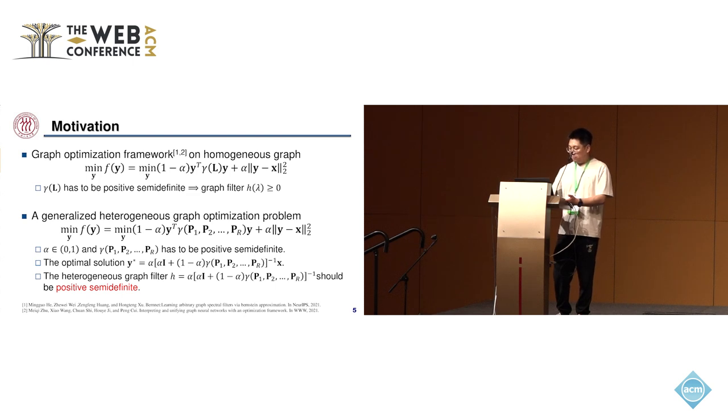We extended the optimization framework to heterogeneous graphs and defined a generalized heterogeneous graph optimization problem. Similarly, the function gamma has to be positive semidefinite. The heterogeneous graph filter H(lambda) has to satisfy a positive semidefinite constraint. So our goal is to obtain a polynomial that can approximate arbitrary heterogeneous graph filters and satisfy the positive semidefinite constraint.